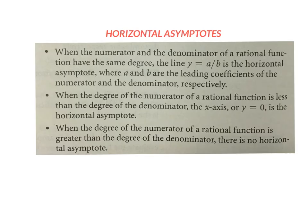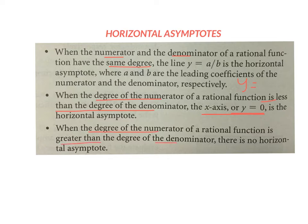Horizontal asymptotes — three cases. The first case is if your numerator and your denominator have the same degree. If that's the case, your horizontal asymptote is y equals the leading coefficient on the top over the leading coefficient on the bottom. The second case is when the degree of the numerator is less than the degree of the denominator — the horizontal asymptote is y equals zero, the x-axis. The last case is if the degree of the numerator is bigger than the degree of the denominator — there is no horizontal asymptote.